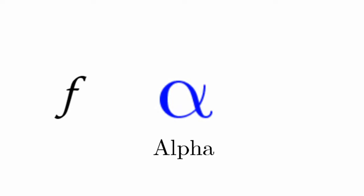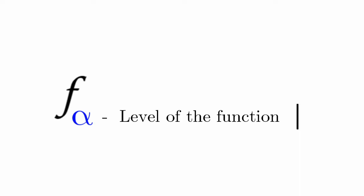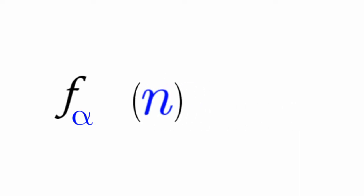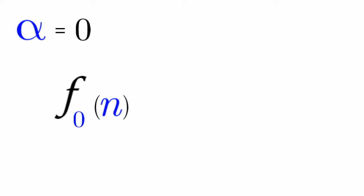We have f, which denotes a function. And then we have alpha, the level of the function. And then we have n, the number we're going to input to the function. Let's have the first level, which is 0. That's f sub 0 of n, which is equal to n plus 1.